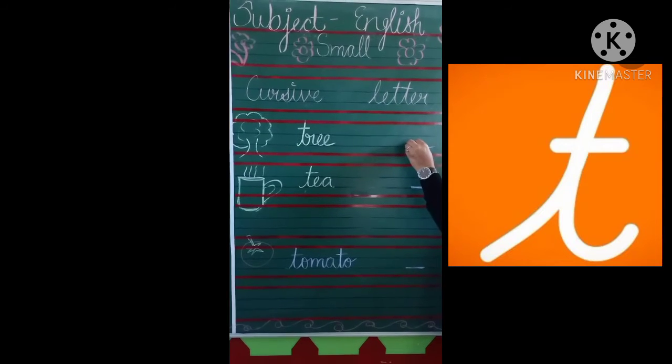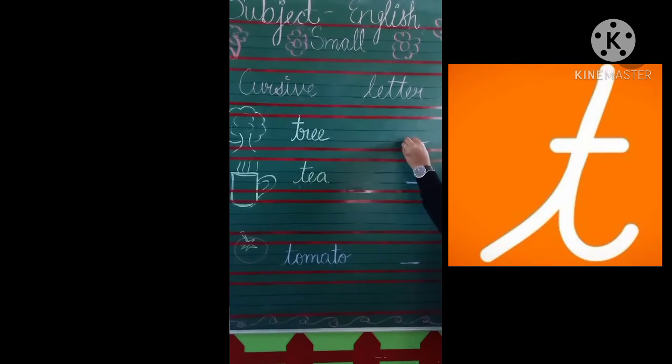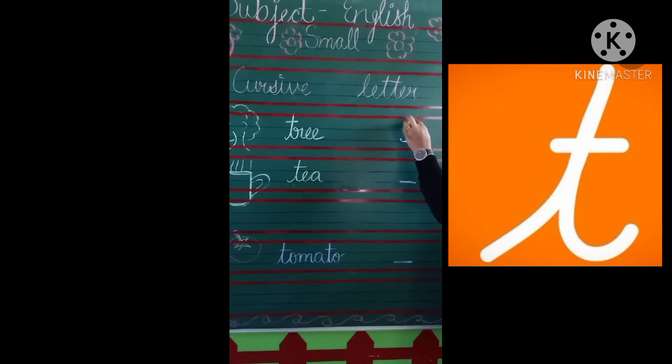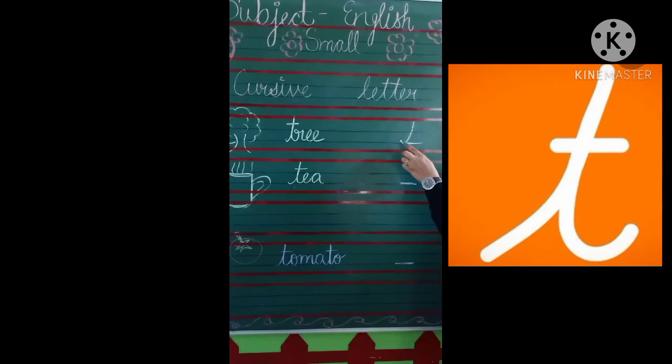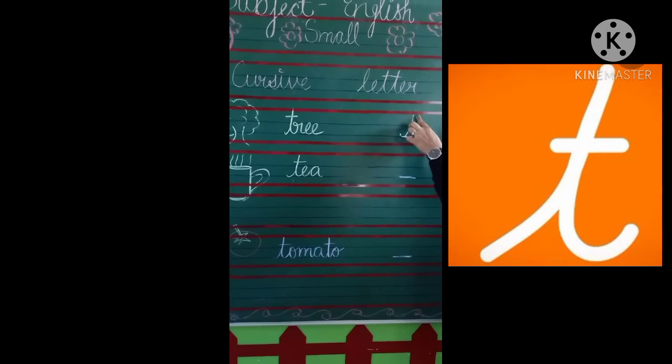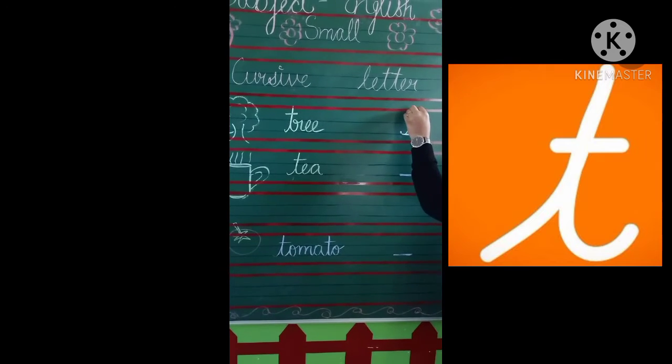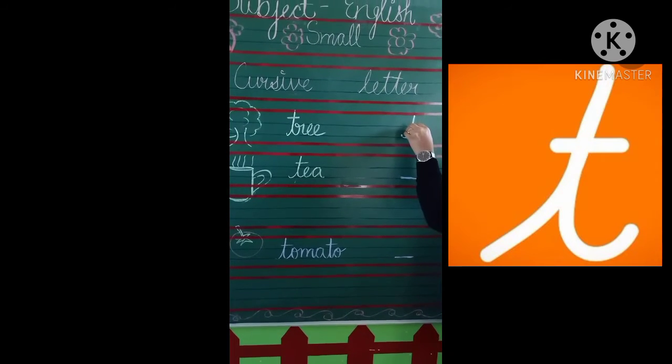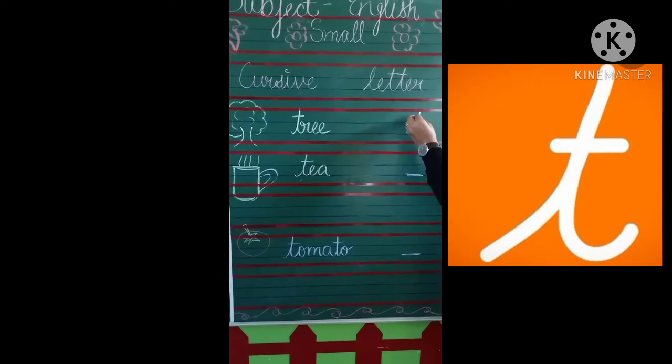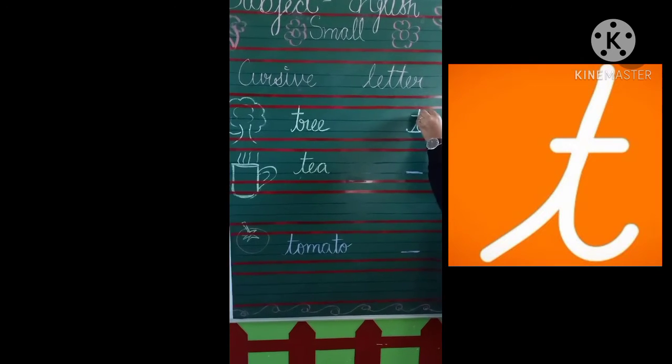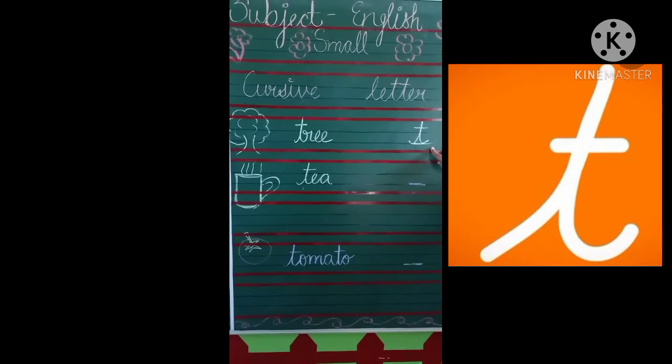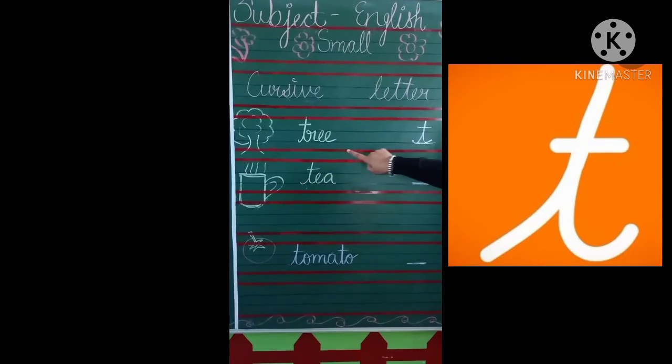Start from the second blue line and take upward to the first red line. Touch the first red line, then back on the same line. Slightly turn it. Here we draw a small sleeping line. This is your small cursive letter T. T for tree.